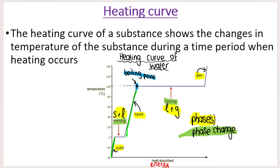A heating curve is basically described as a curve that shows the change in temperature of a substance during a time period when heating occurs. When we heat a substance, we are adding heat energy to that substance. Adding heat does not necessarily mean the temperature of the substance increases. There is a difference between heat — basically another word for heat in this context is energy, heat energy — and temperature.